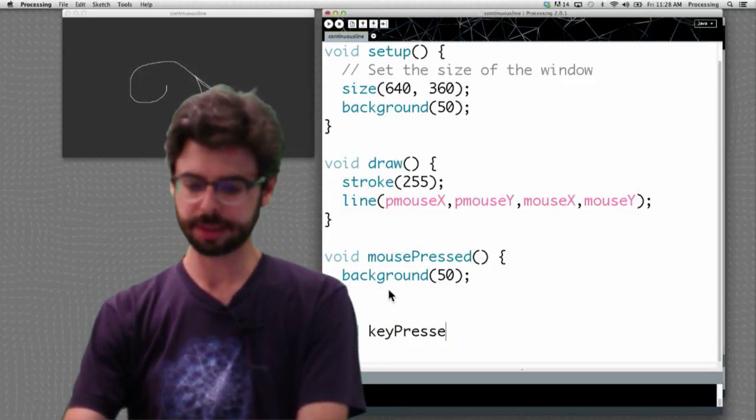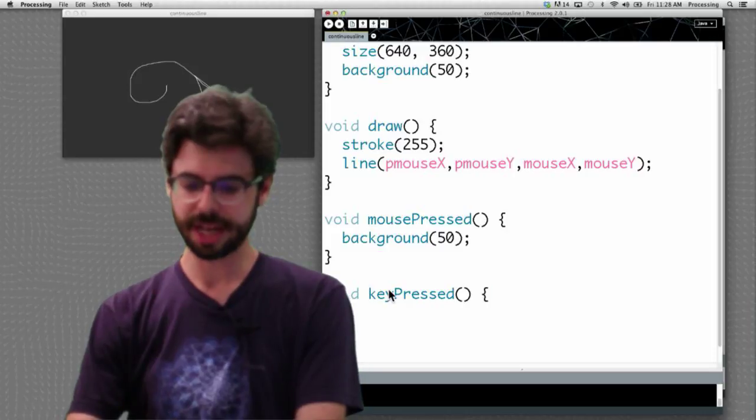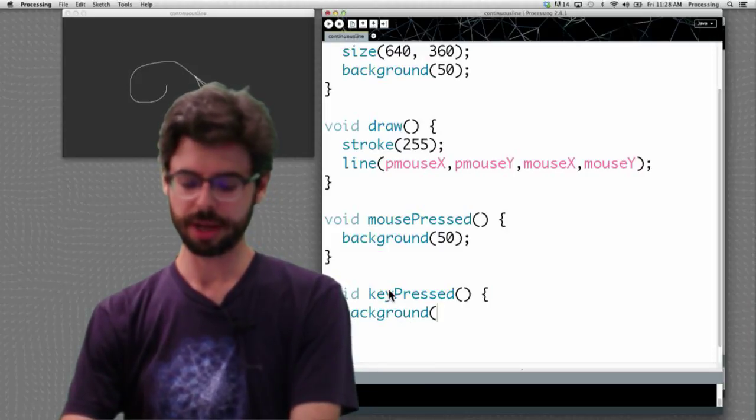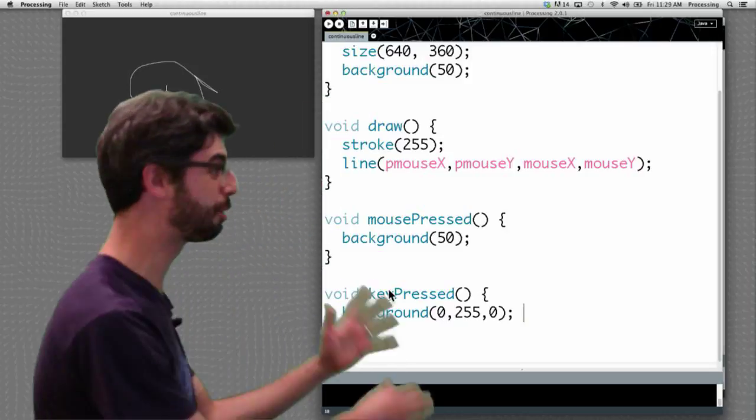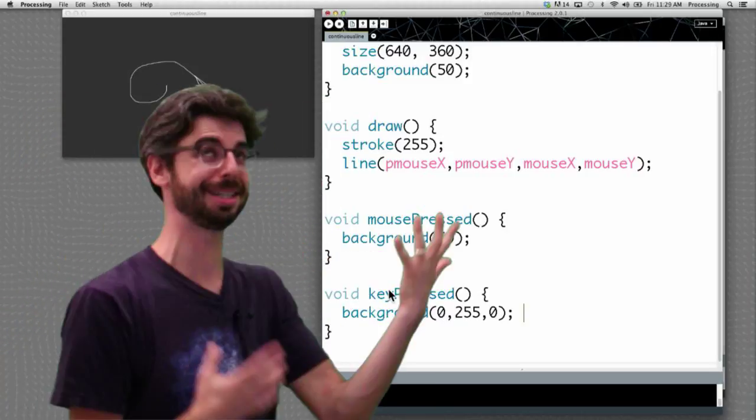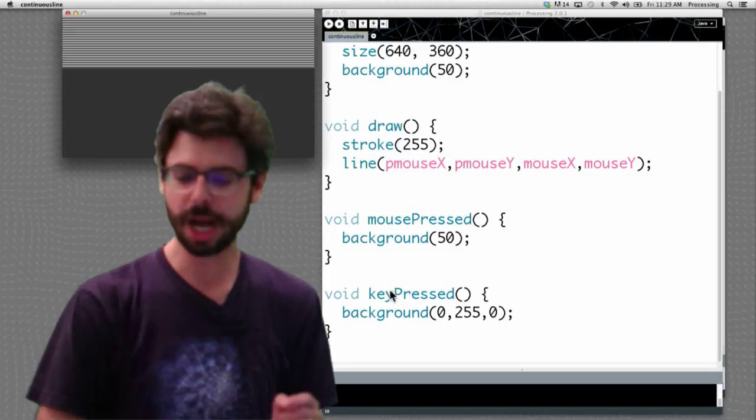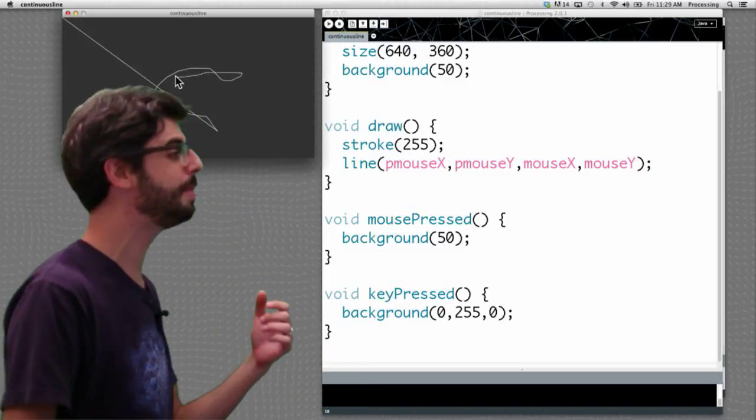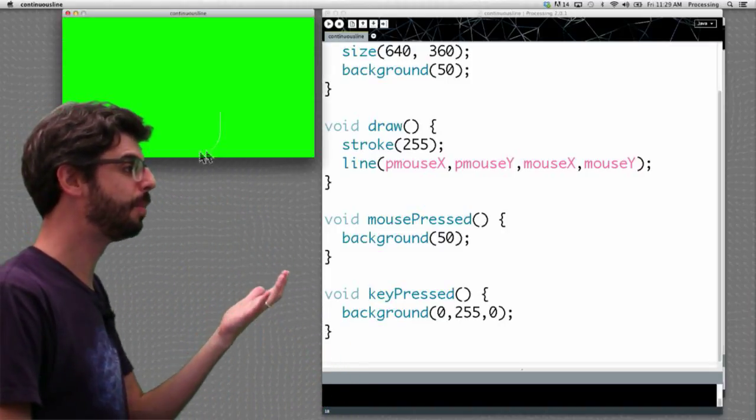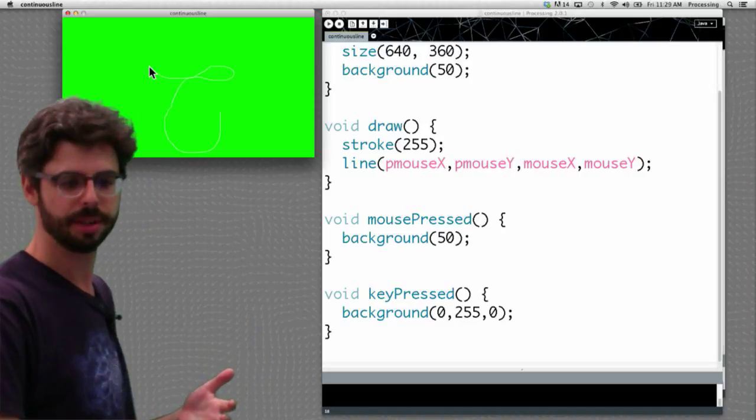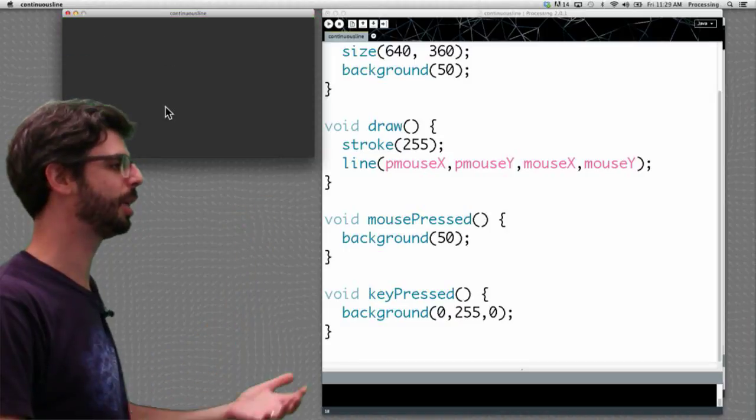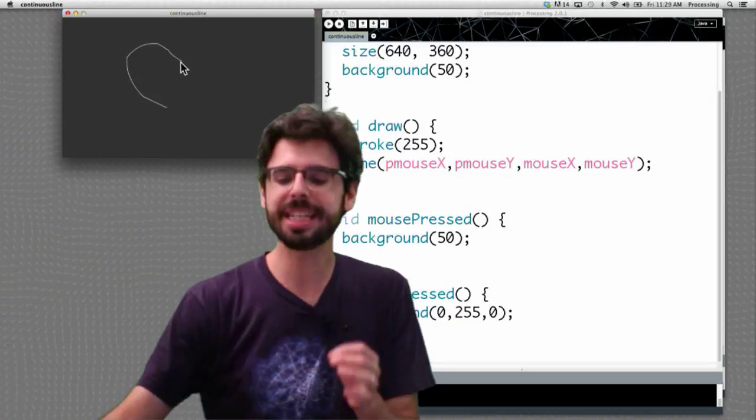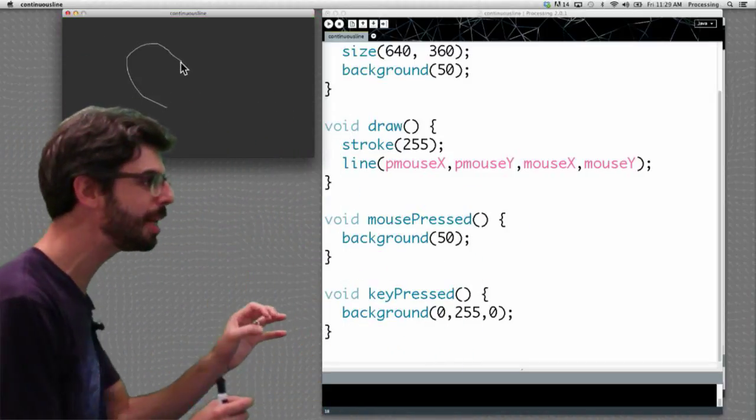For example, I could say, void key pressed, just to add another event. And I could say background, you know, this - I said we do something kooky. We're doing a different color in key press, but what can you do? We can say here, every time I click the mouse, it erases the background with gray. When I press a key, then it does a green background. You can see how these are separate events. A key pressed, a mouse pressed.